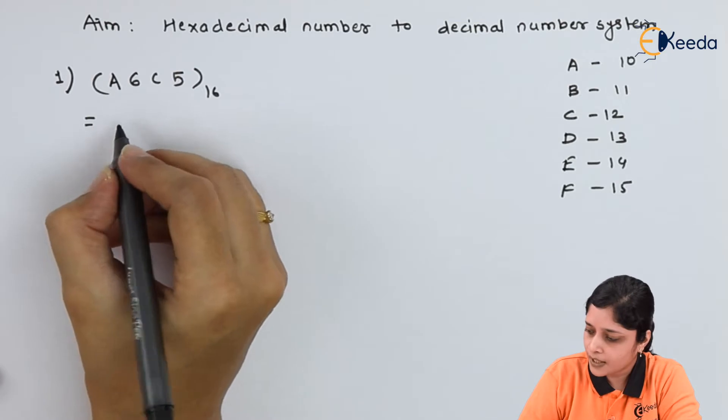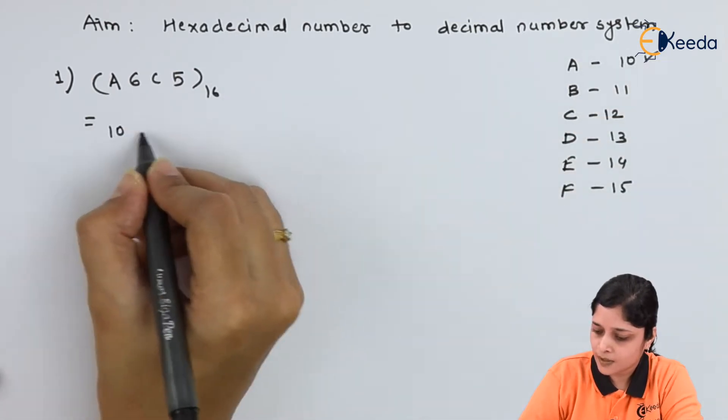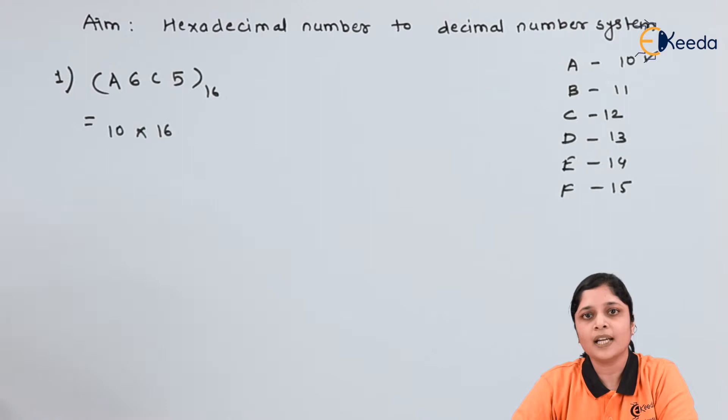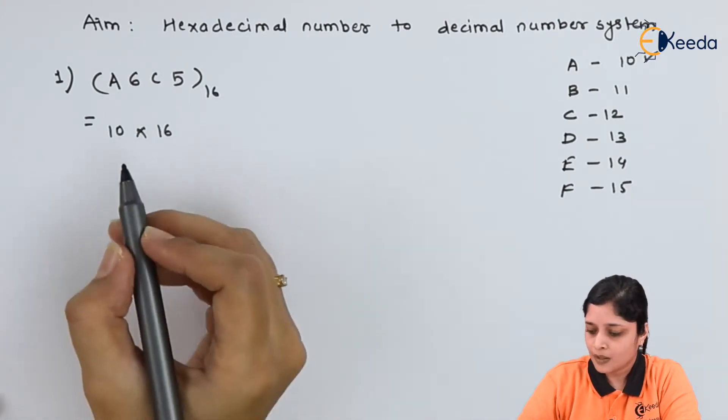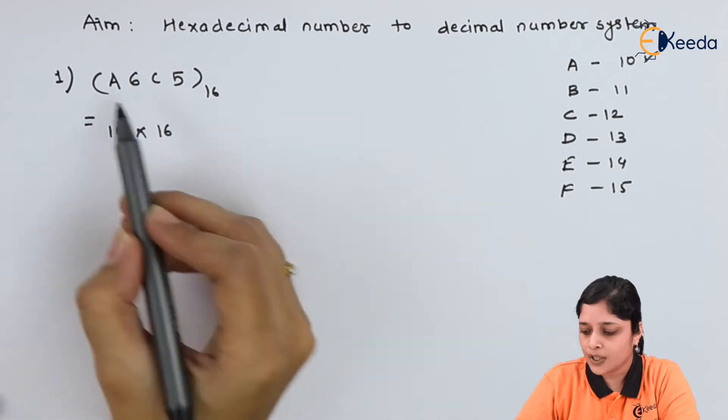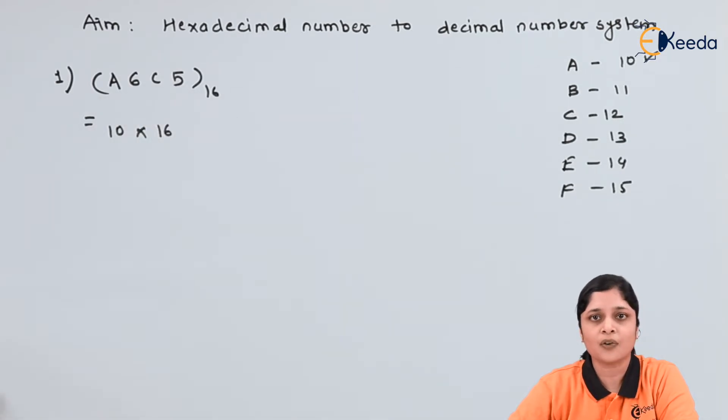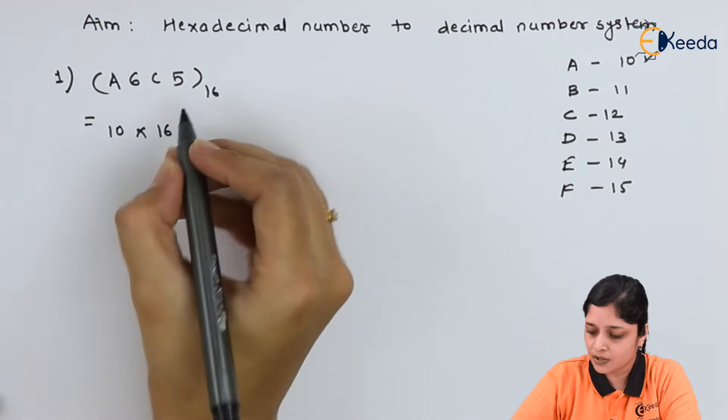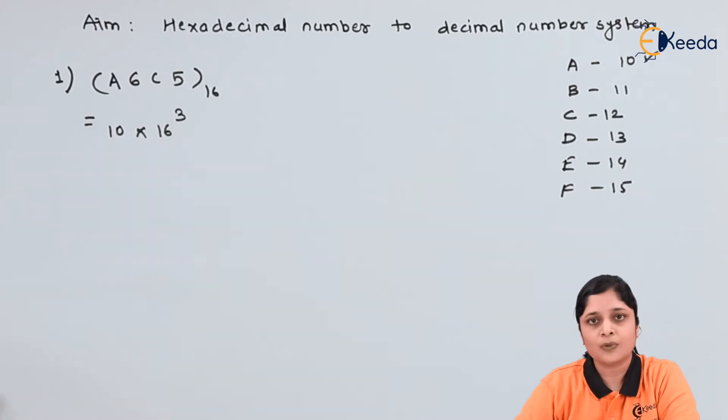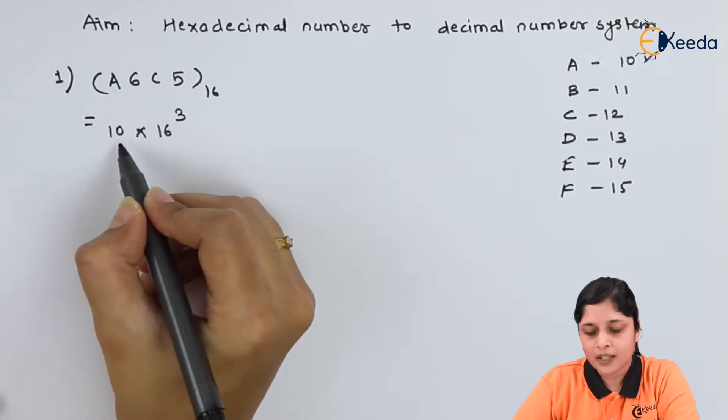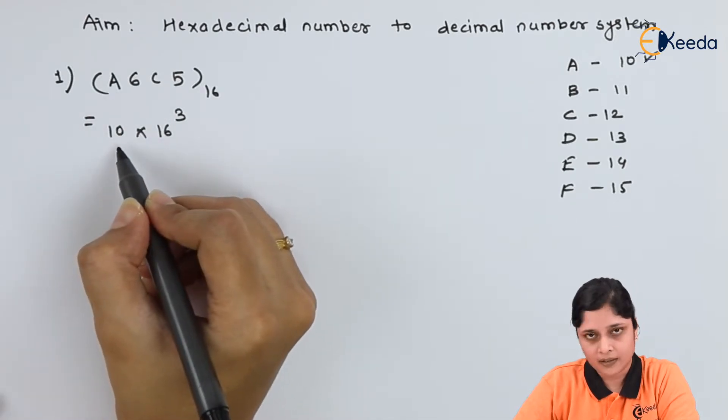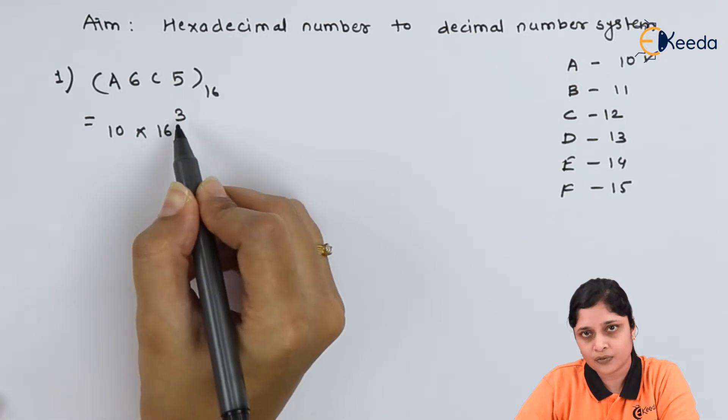For A, value is 10. 10 into, now your aim is to get into decimal number, so always write down in terms of 16 rest to the power number. So you have to count here 1, 2, 3, 4. So first power will be 4 minus 1 is 3. You have to start with 16 rest to the power 3. A equivalent of A is 10. 10 into 16 rest to power 3.